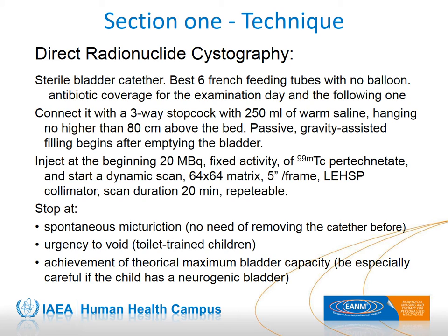The scan starts the moment the radiopharmaceutical is injected. Twenty megabecquerels of pertechnetate is sufficient. The use of a low-energy but highly sensitive collimator allows for maximum sensitivity, and the loss of resolution does not matter in this clinical setting. The field of view must largely encompass the kidneys and the bladder, so it is better to refrain from over-zooming. The bladder filling stops when the child spontaneously voids or requests to stop. For a neurological bladder, it is recommended to stop the filling at the expected maximum bladder capacity.